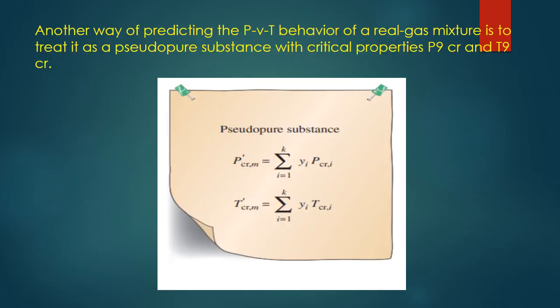Another way of predicting the PVT behavior of a real gas mixture is to treat it as a pseudo-pure substance with pseudo-critical properties P'_CR and T'_CR, given by: P'_CRM = Σ(Y_I · P_CRI) and T'_CRM = Σ(Y_I · T_CRI).